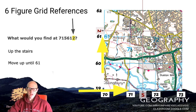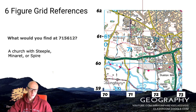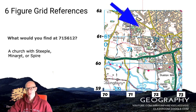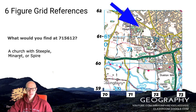Once I've gone up to 612, I draw my imaginary line across, and where those two lines meet is the symbol or item I'm looking for on the map. In this case, it is a church with a steeple, minaret, or spire. And that's how you find six-figure grid references on an Ordnance Survey map.